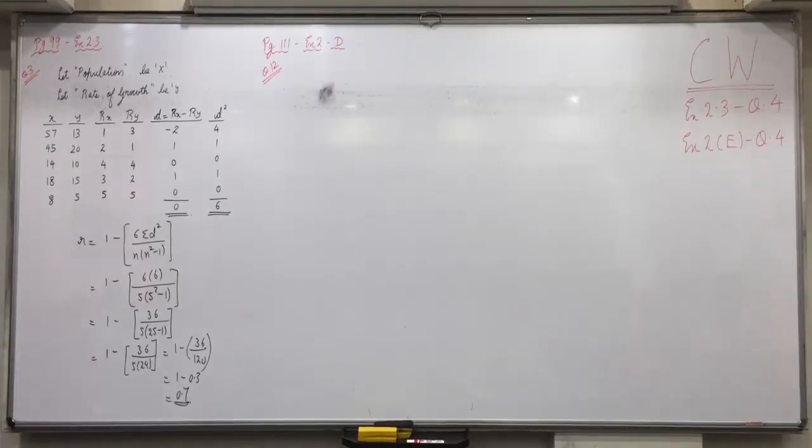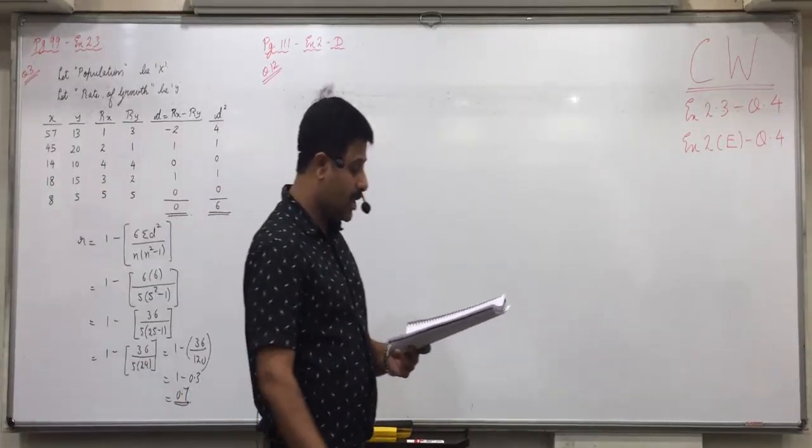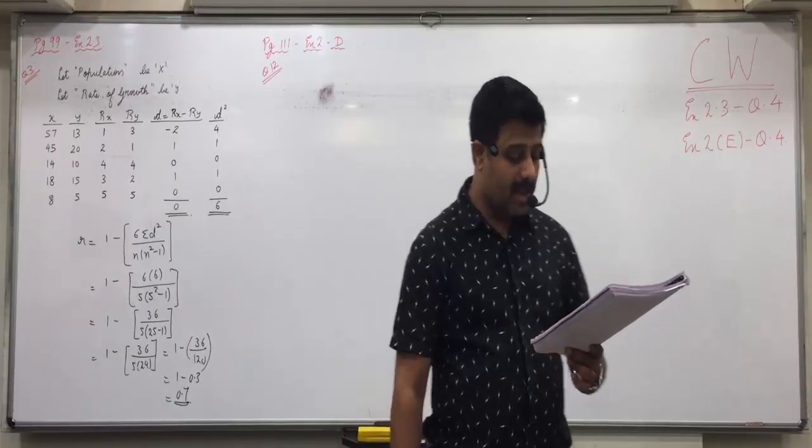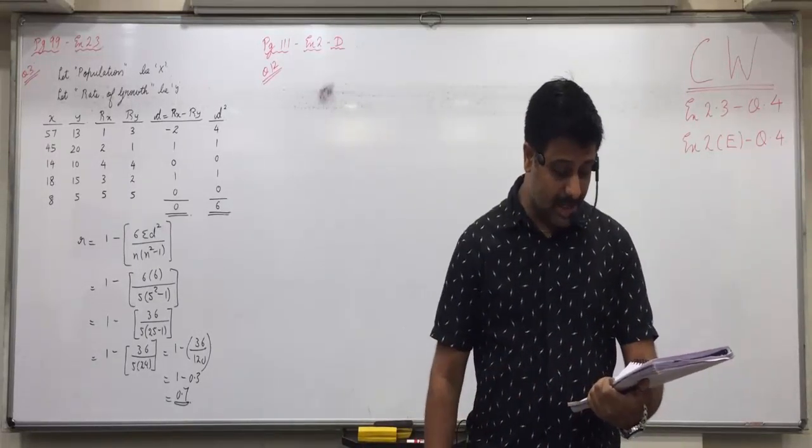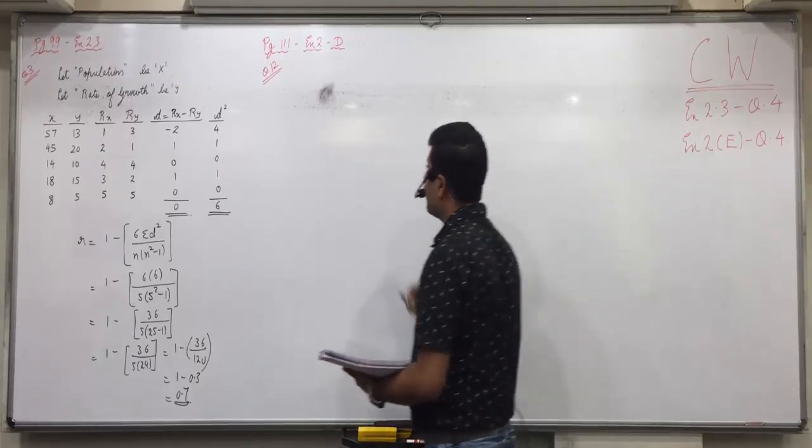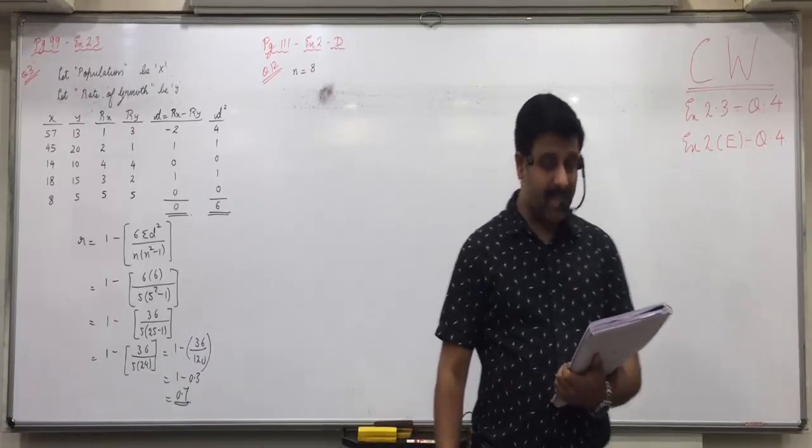Now we practice objective questions based on this, which can come for 2 or 3 marks. Page 11, Section B, Question 12. The information obtained on the basis of ranks given by 2 judges to 8 contestants. What is that? N equals to 8, of a dance competition is given below.